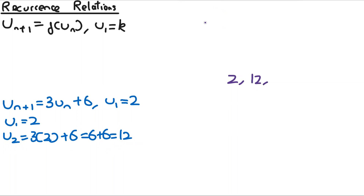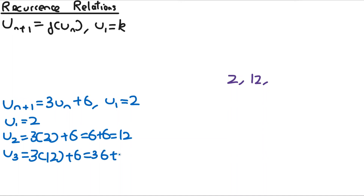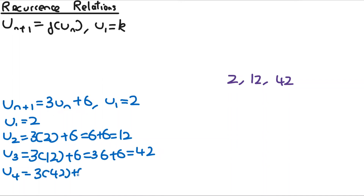The third term is defined by the second term, 12, substituted into the formula: u3 = 3×12 + 6 = 36 + 6 = 42. And then the fourth term u4 is defined by the third term 42: u4 = 3×42 + 6 = 132. So the fourth term is 132.